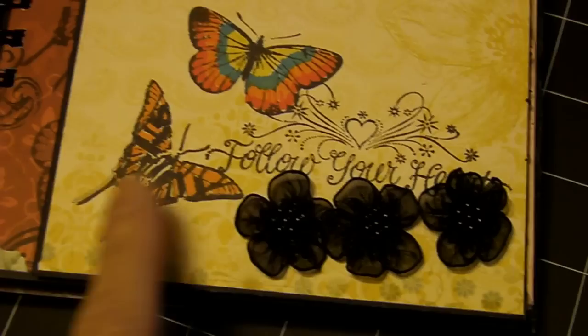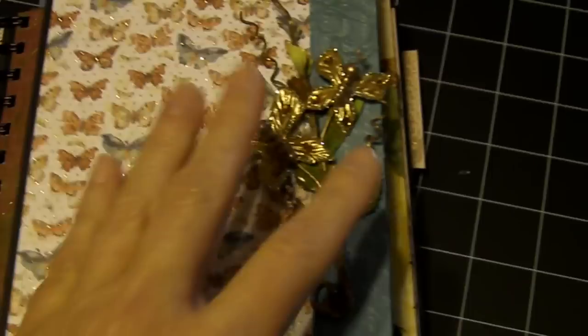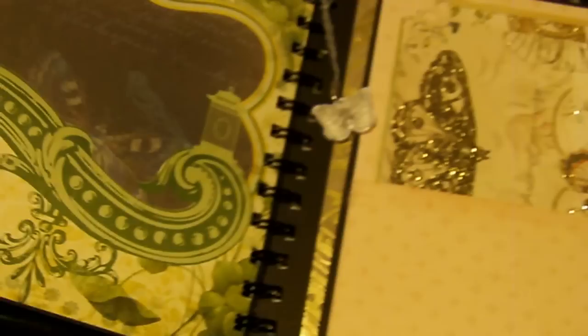Then this page says follow your heart, if you can get a glimpse of that. These I stamped on here and then just kind of colored them in with my markers. This page I did some more stamping here and then did this little frame, and then she can journal. I put another photograph on this side.